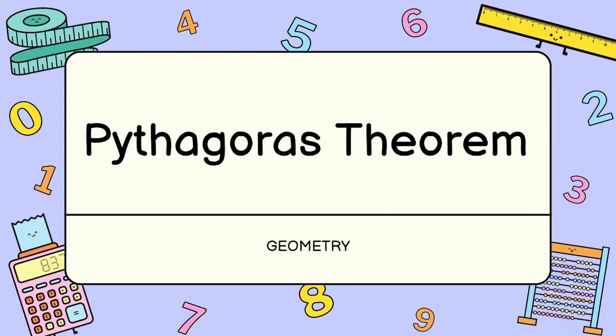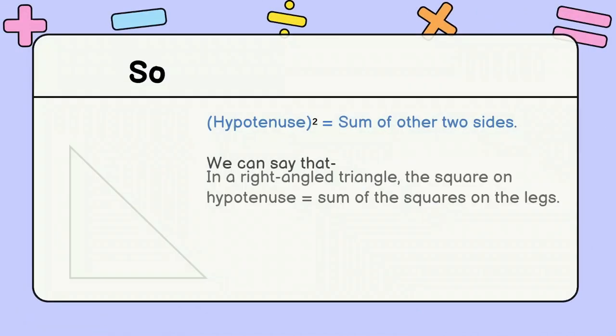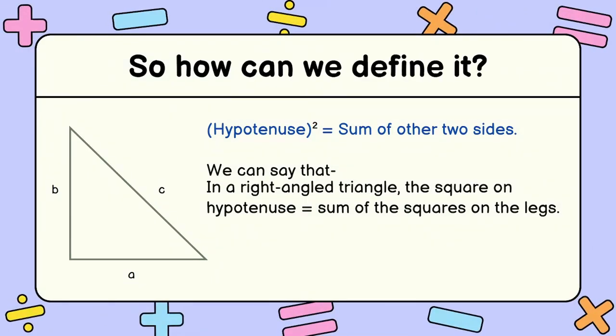All right everyone, welcome back to another video. Today we're going to be learning about the Pythagorean theorem, which is a part of geometry. So how can we define it? Well, hypotenuse squared is equal to the sum of the other two sides.